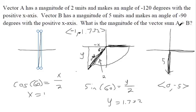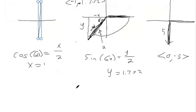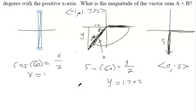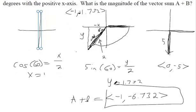So to find the sum of these two vectors, we just need to add their components. So vector A plus B, that's going to be the sum of the x components. So negative 1 plus 0 is negative 1. And negative 1.732, remember that's a negative. Negative 1.732 plus negative 5, that's negative 6.732. And there we go. That's the sum of the two vectors. Thank you.